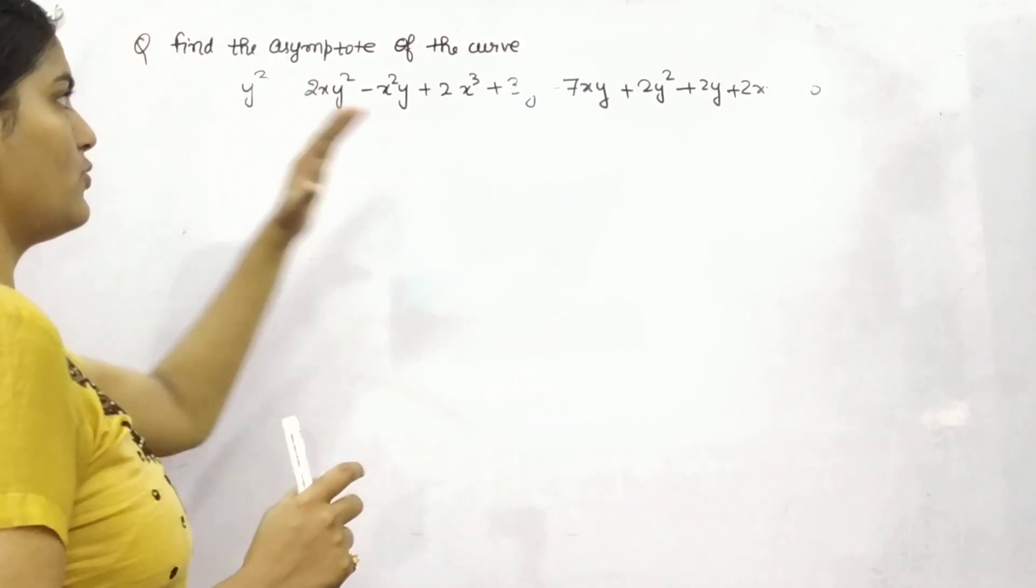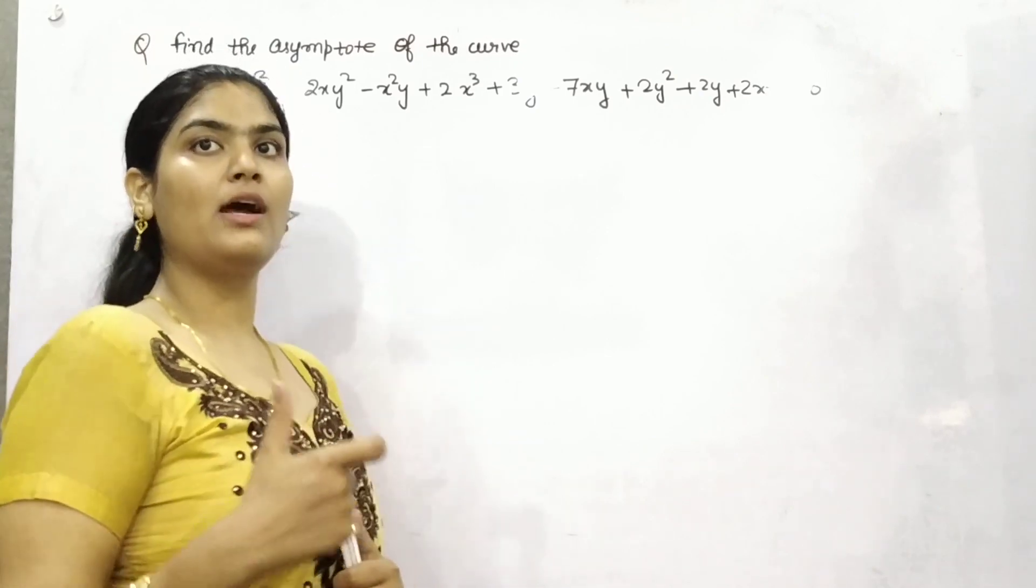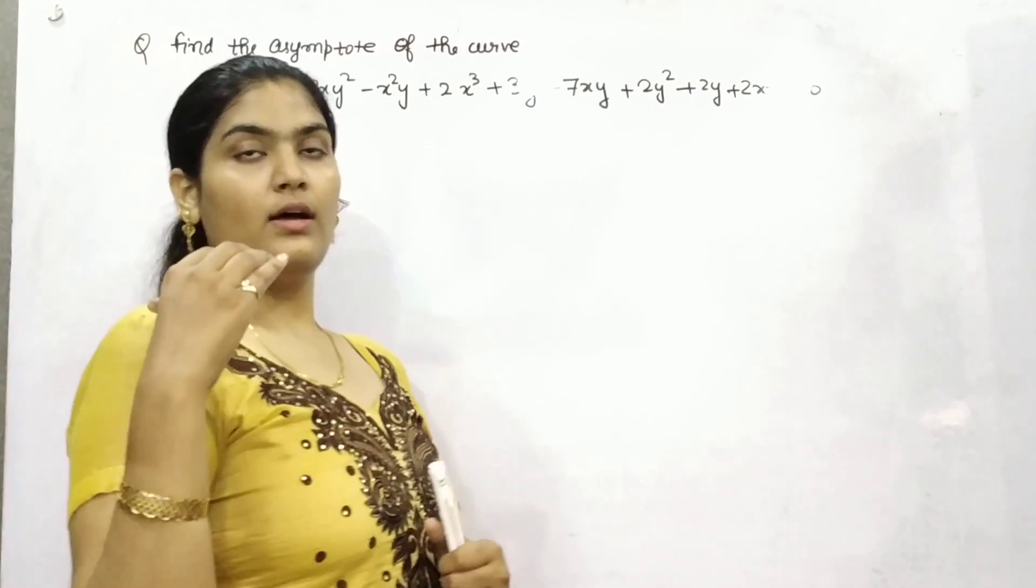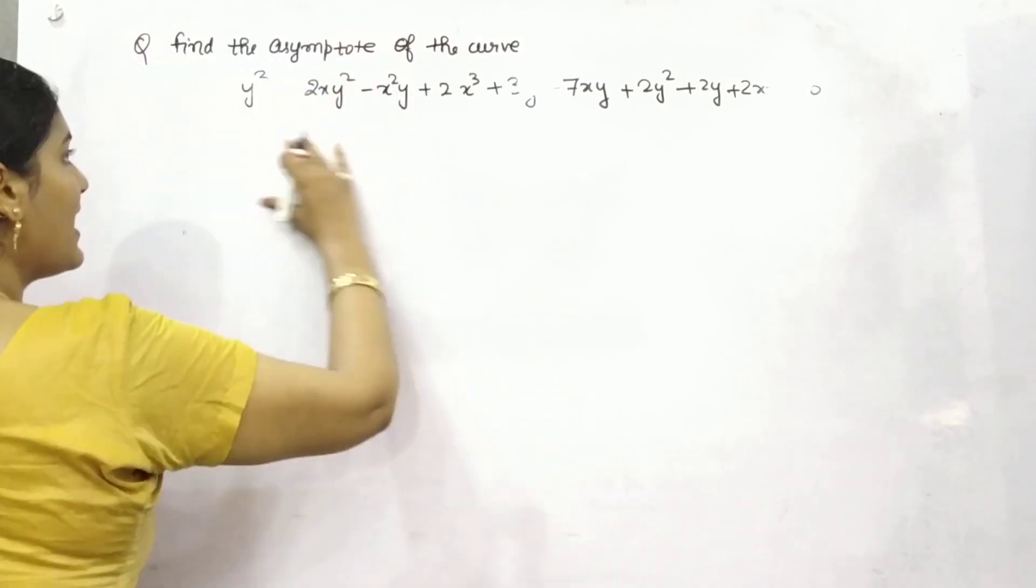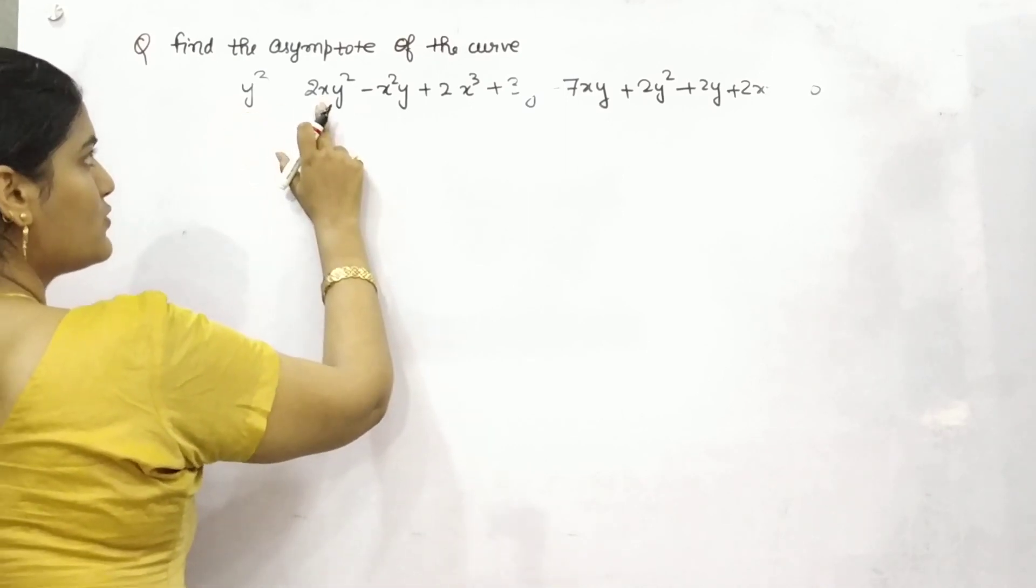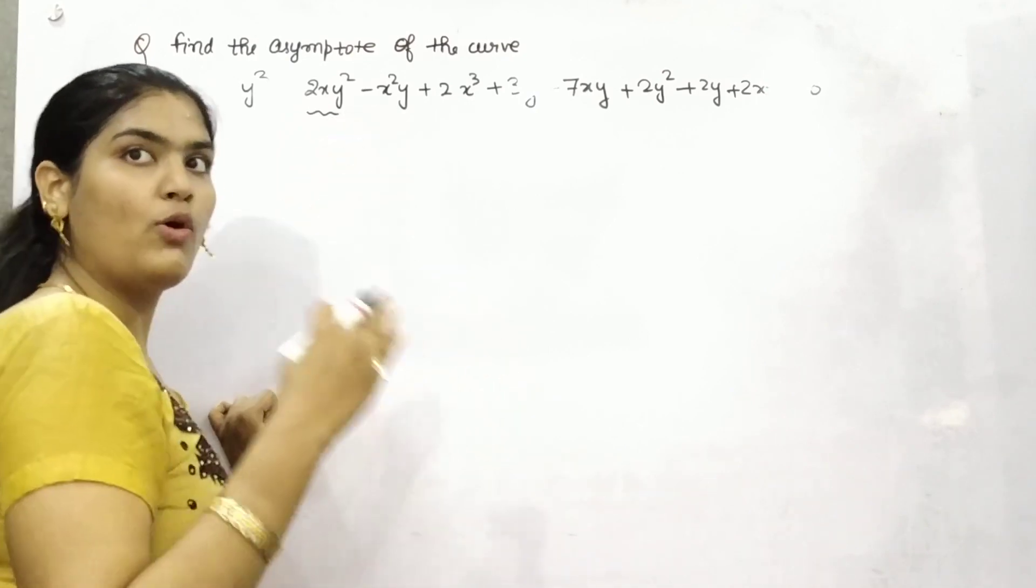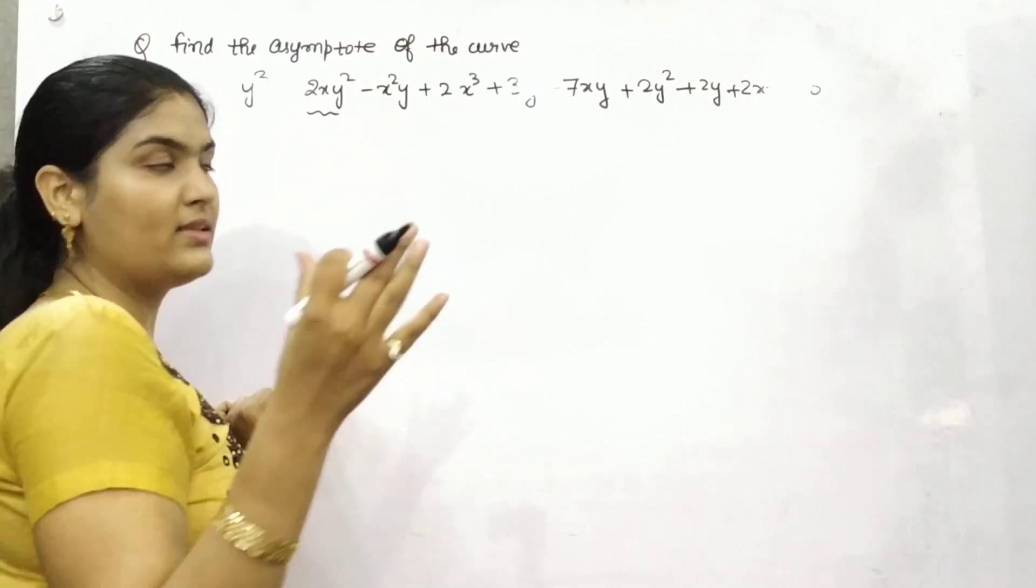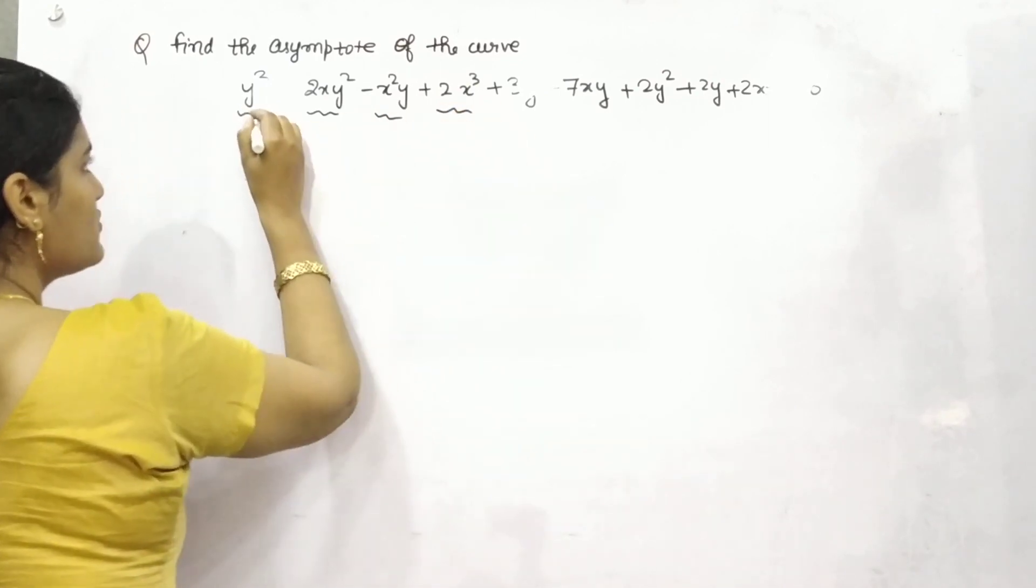You need to find out that asymptote. You are given with an equation. Now first step is to find out all of those high degree order variables. So you can see the highest degree is 3. It is of 3 degree. This is also 3, 1 and 2, 3 because it is one term. So adding all the powers, you will get the degree. So this is also 3, this is also 3. So these four terms.